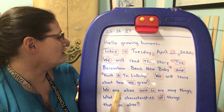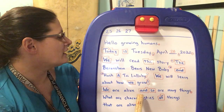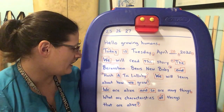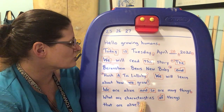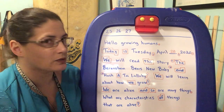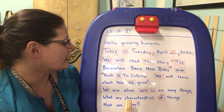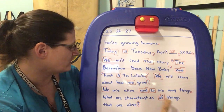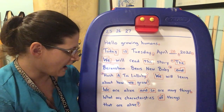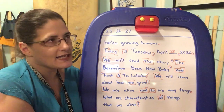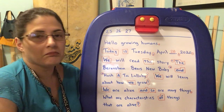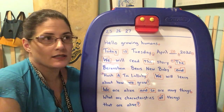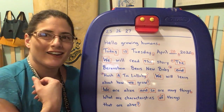We are alive and so are many things. Many things are alive. What are characteristics? That's a really big word — characteristics. What are characteristics of things that are alive? Characteristics means features, things that make something. A characteristic of me is my eyes and my hair, my smile.